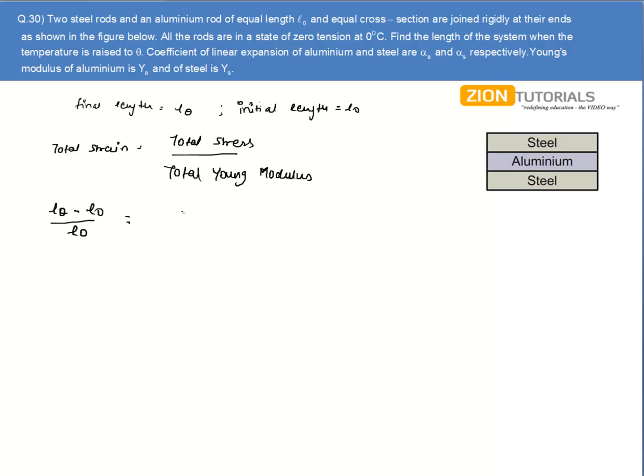Now for total stress, first of all I will calculate total stress. Total stress will be equal to stress, let's say stress is denoted by sigma. So sigma of aluminum plus two times sigma of steel, because there are two steel rods and one aluminum rod. And total Young's modulus will be Young's modulus of aluminum plus two times Young's modulus of steel.